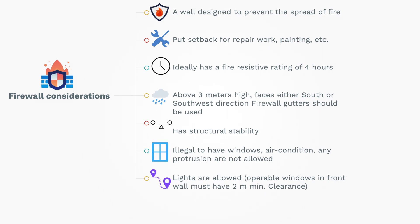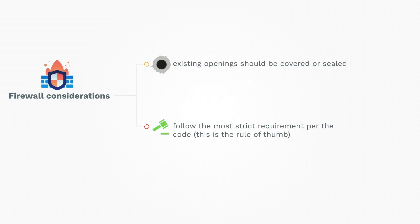Any openings or protrusions are not allowed in a firewall, like windows. However, windows are allowed in front of a firewall to optimize passive lighting, as long as there's at least 2 meters of minimum clearance from the surface of the firewall. Any existing holes or openings must be closed by covering or sealing. Lastly, when you encounter two or more provisions from a single or several codes, as a rule of thumb, always follow the one with stricter and safer requirements.